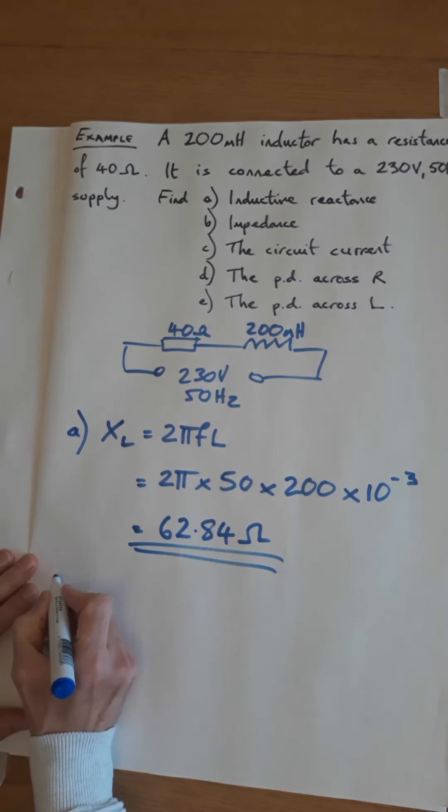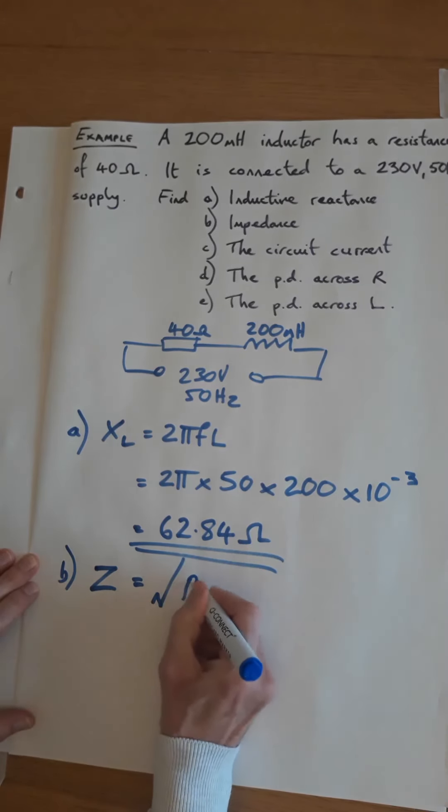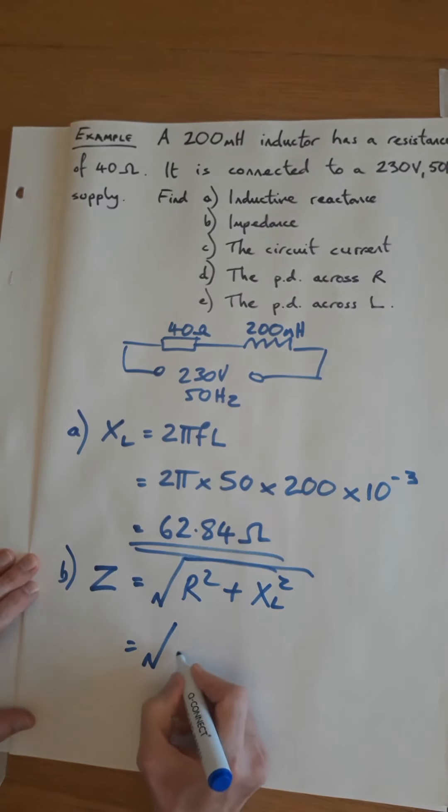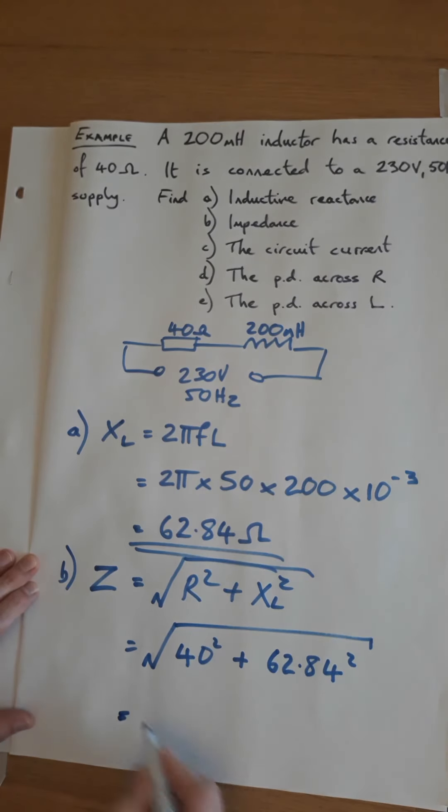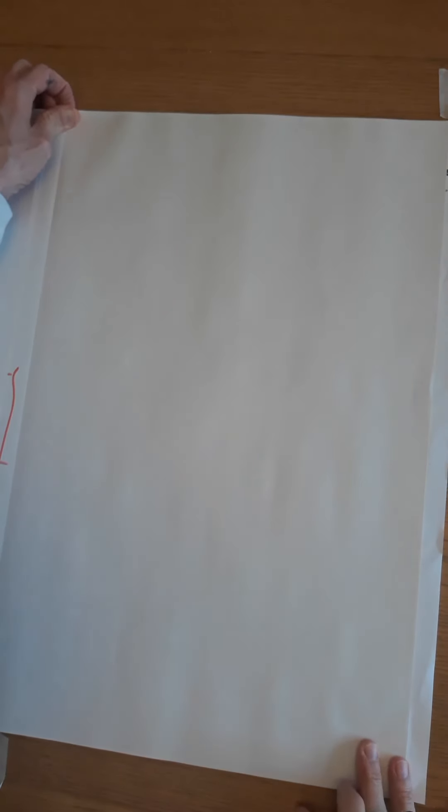Next step, find the impedance of the circuit. So that's the formula we just covered. Z equals the square root of R squared plus XL squared. Put the numbers in: square root of R squared, that's 40 squared, plus XL which is 62.84 squared, and it's the square root of the whole lot. If you put that in the calculator, I'm hoping you'll come up with 74.5 ohms.